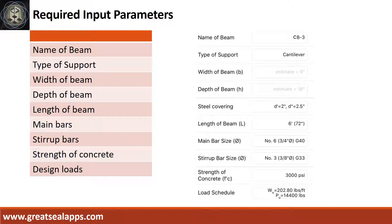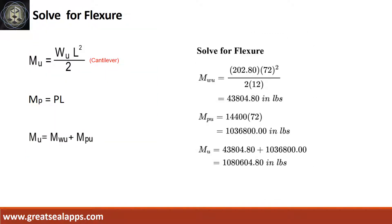Factored uniform load is 202.8 pounds per foot and factored concentrated load is 14,400 pounds, with L equals 6 feet.